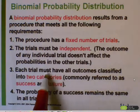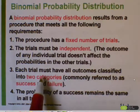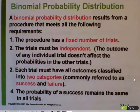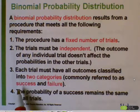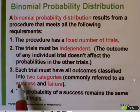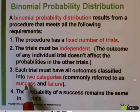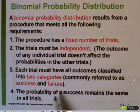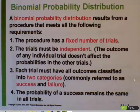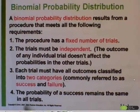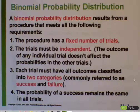Each trial must have all outcomes classified into two categories. We commonly call those success and failure, but that's not a value judgment. Success is whatever we're studying. So if we're studying the number of people who develop a certain type of cancer, then developing that cancer would be called success and not developing it would be failure. The fourth requirement is that the probability of success has to remain the same in all trials — it doesn't change from trial to trial.